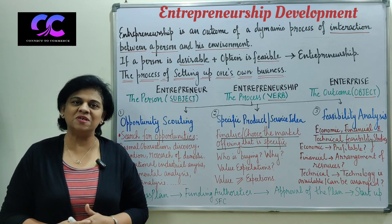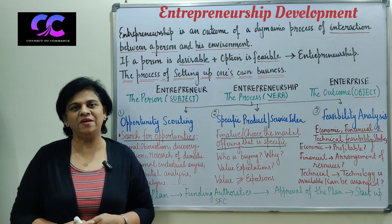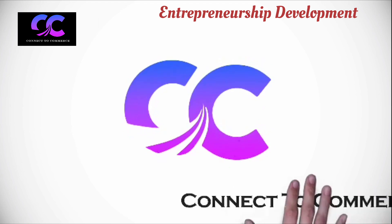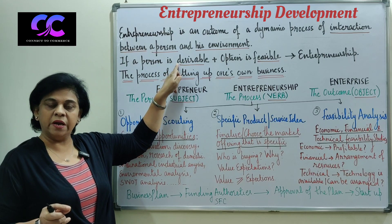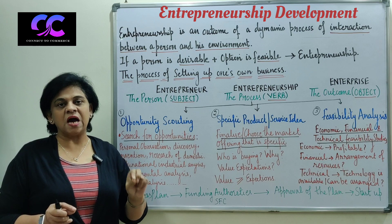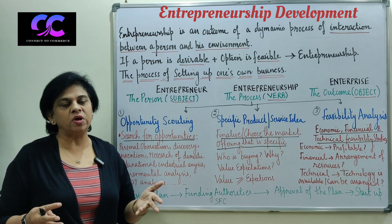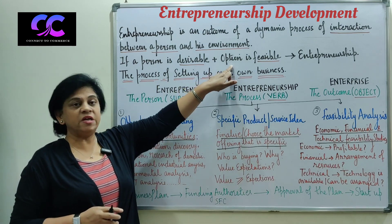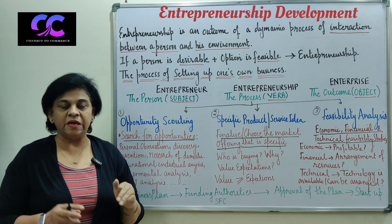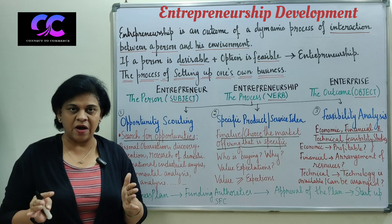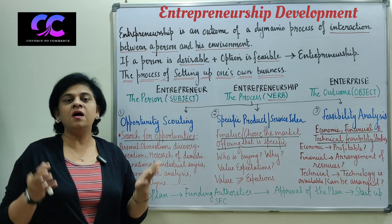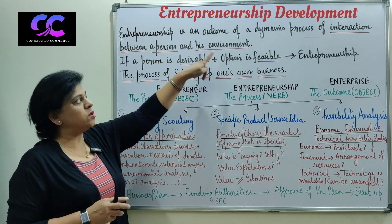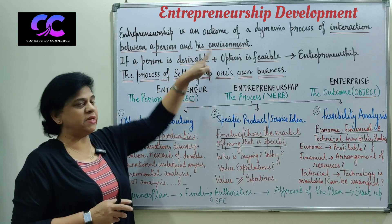So let's connect to commerce and learn about the process of entrepreneurship development. The second requirement is feasibility. Feasibility means practicality — it means that the business idea in the entrepreneur's mind is feasible. This is why we say that entrepreneurship is an outcome of a dynamic process of interaction between a person and his environment.